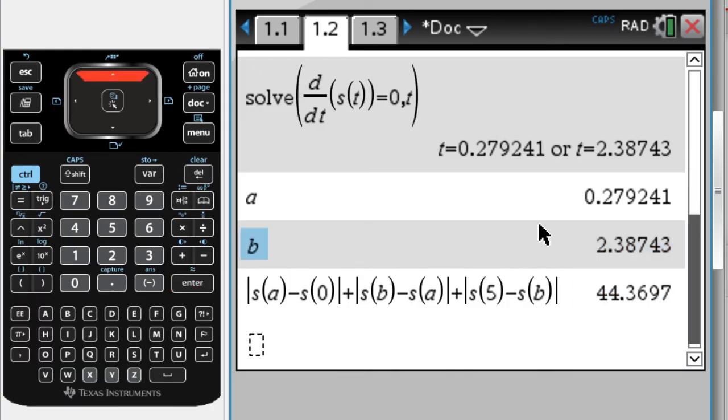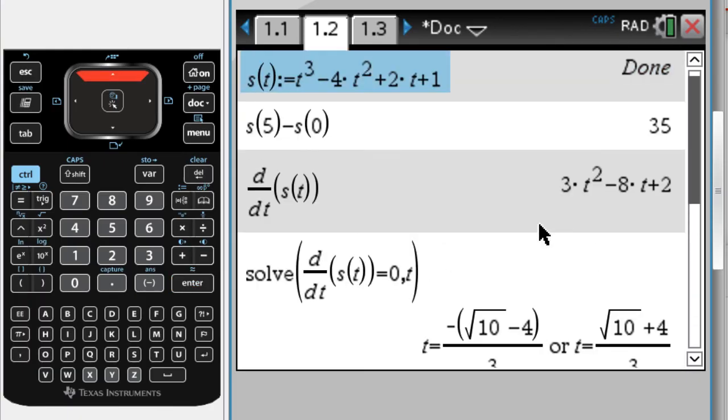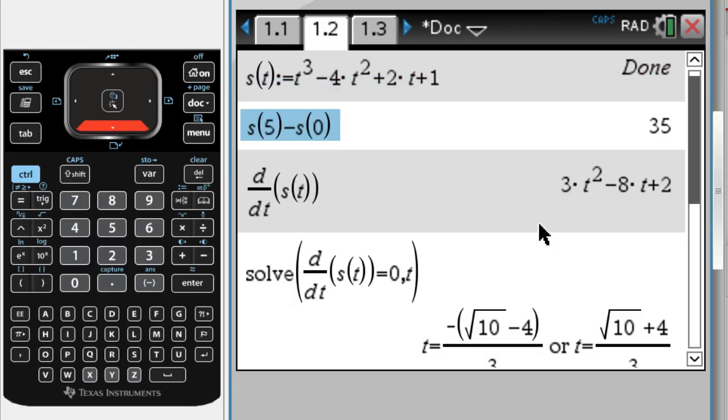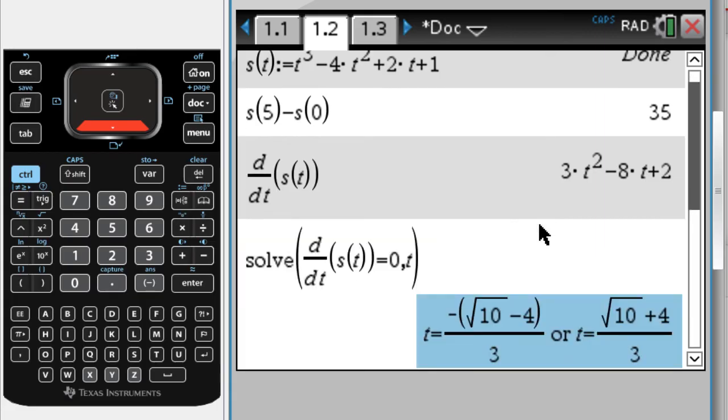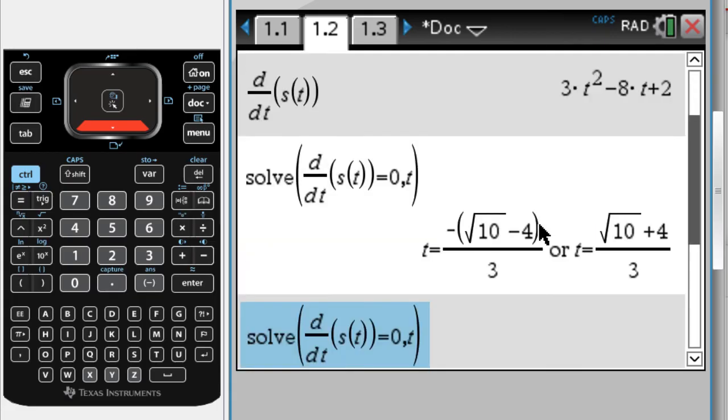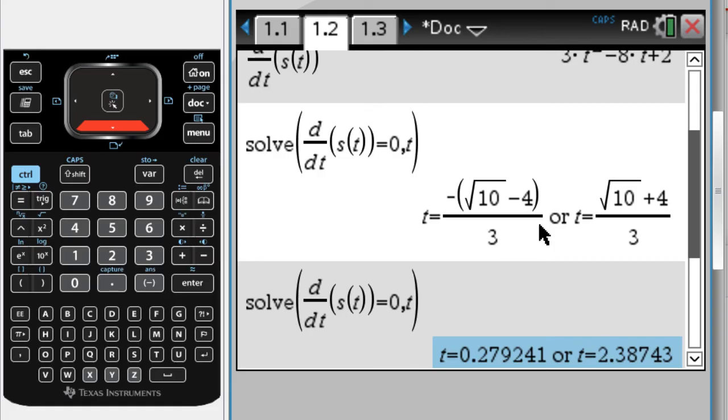It was kind of a lot that we did. We started with S of T. We found the displacement on the time interval from zero to five, did that in like 30 seconds, maybe less, not bad. Then we had to deal with distance traveled. So distance traveled, we need to know where does this thing turn around so that we can find the displacement on each leg of the journey. So I found the derivative. Then I solve for the derivative equal to zero. It wasn't immediately clear to me that all of these or both of these would be in the interval. So I got decimal equivalents to them by hitting control enter.